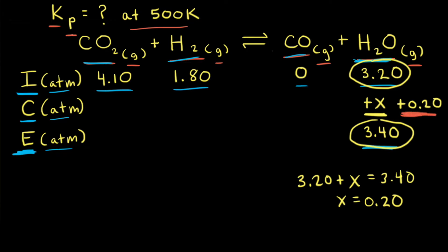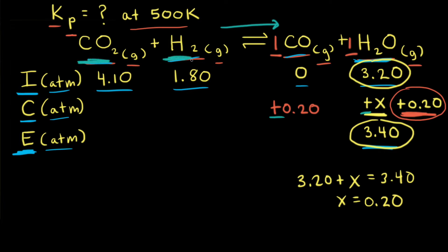Now that we know the change for H2O, we can fill out the rest of the ICE table. The mole ratio of carbon monoxide to H2O is 1 to 1, so if we gained plus 0.20 for H2O, we also gain plus 0.20 for carbon monoxide. Since we're gaining products, the net reaction is moving to the right, which means we're losing reactants. Both reactants have coefficients of one, so it's minus X — that is, minus 0.20 — for the change in partial pressure of both reactants.